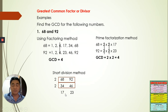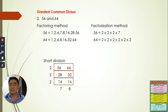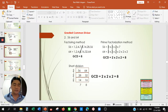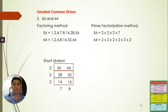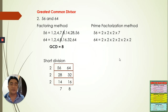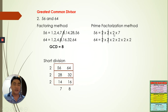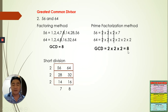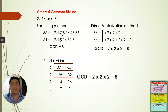We divide until we reach prime numbers and can no longer continue. So we have two times two, which is four. For the next example, using prime factorization we find three pairs of twos, giving us two times two times two, which is eight. For the short division method, we similarly multiply the common divisors and get the GCD.